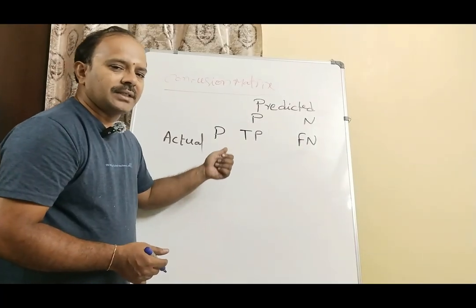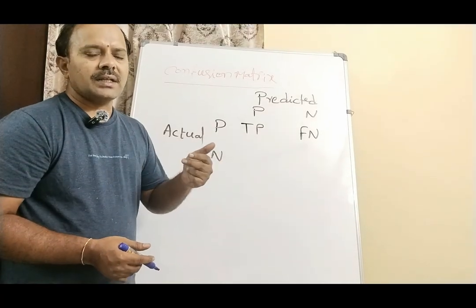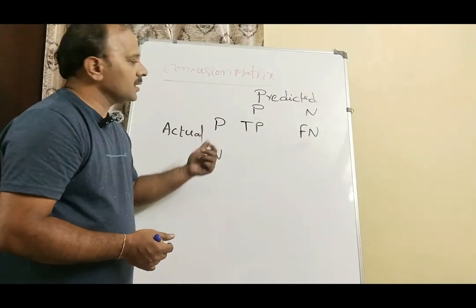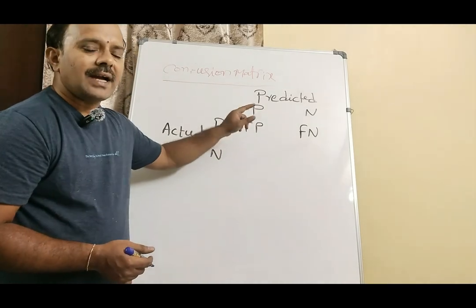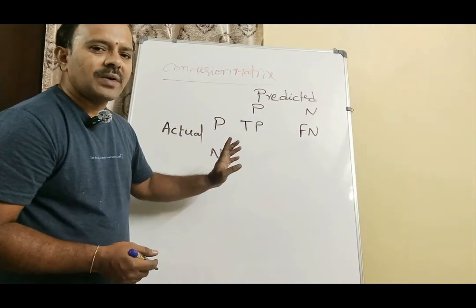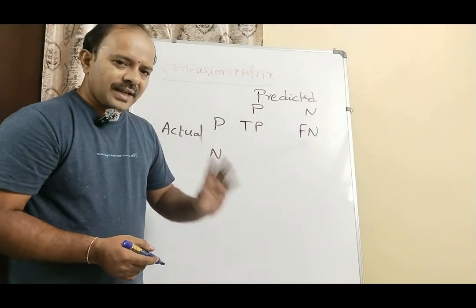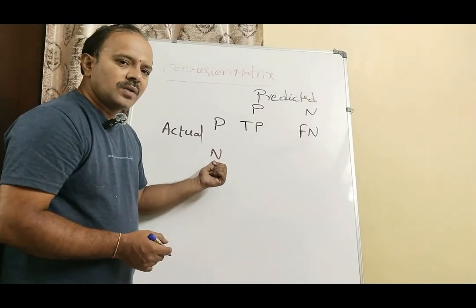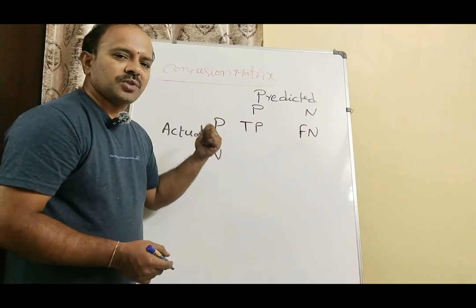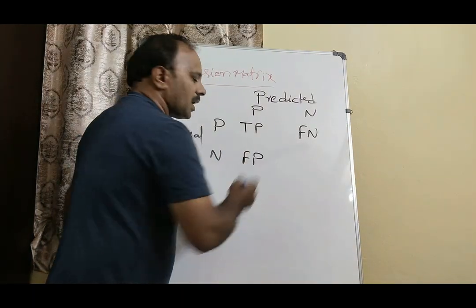When the sample or record is actually negative and the model predicted it as positive, that is a false positive — by nature it is a negative value but the model predicted it as positive, so we call it false positive.